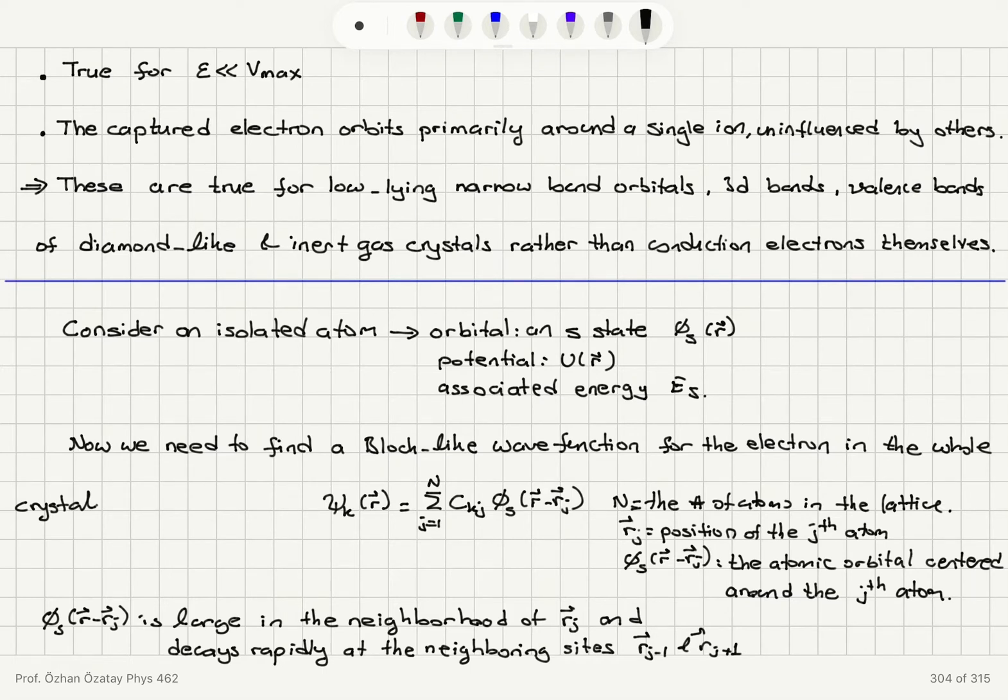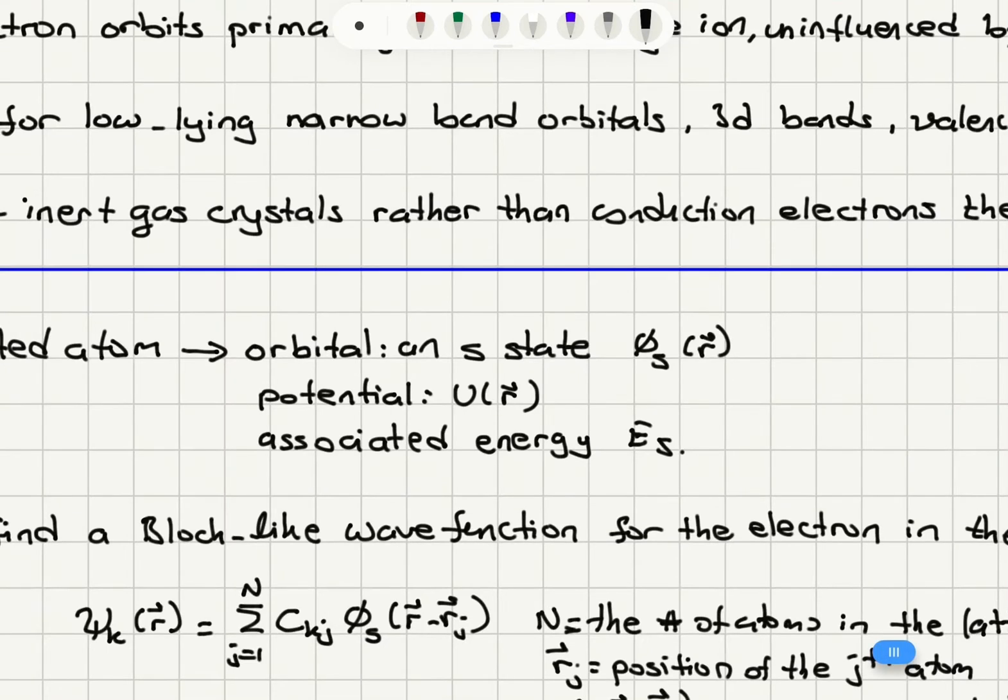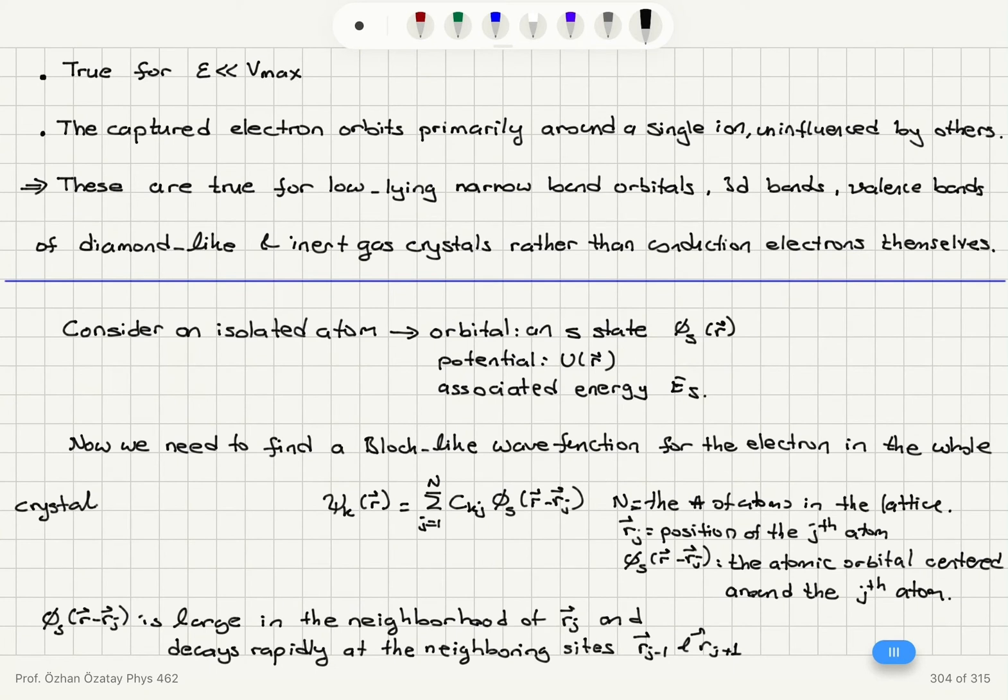Now let's consider an isolated atom. It has an orbital that's an s state. So we show the wave function phi of s as a function of r and there's the potential u of r. This is the potential well the electron sees and the associated energy with this electron is Es.